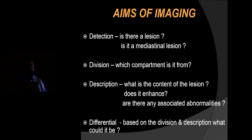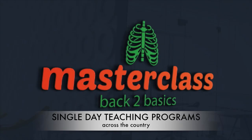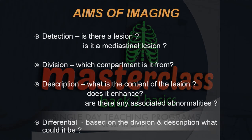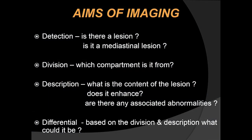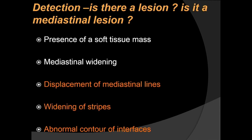So what are the aims of imaging when we have a lesion in front of us on a chest radiograph? First, we need to decide whether there is a lesion, is it a mediastinal lesion, in which division or compartment is it from, what is the content of the lesion, does it enhance, are there any associated pulmonary or skeletal abnormalities, and based on these divisions and description, what could it be.